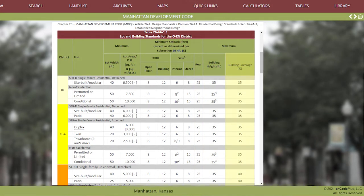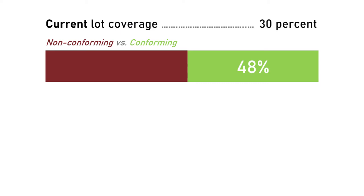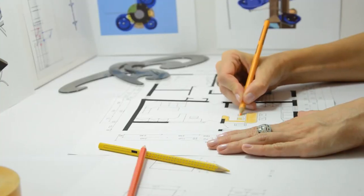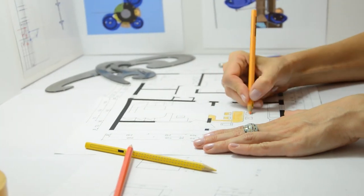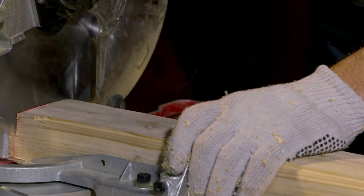Another issue we found was in dealing with lot coverage. The issue was very similar to setbacks. Because this is an older part of town, the lots are very small and buildings tend to take up a lot more of the lot than you would see in a more suburban setting. Our current lot coverage maximum is 30%, and when we sampled the homes in the established neighborhood overlay, we found very little compliance with that 30% — in fact, only about half of properties were in compliance. When we adjusted that lot coverage maximum just 5% to 35%, that compliance rate increased to 88%. When homeowners would come to us with a project wanting to do an addition, very often they would run up against that lot coverage maximum, which really hindered their ability to improve their homes in these areas that really need it.